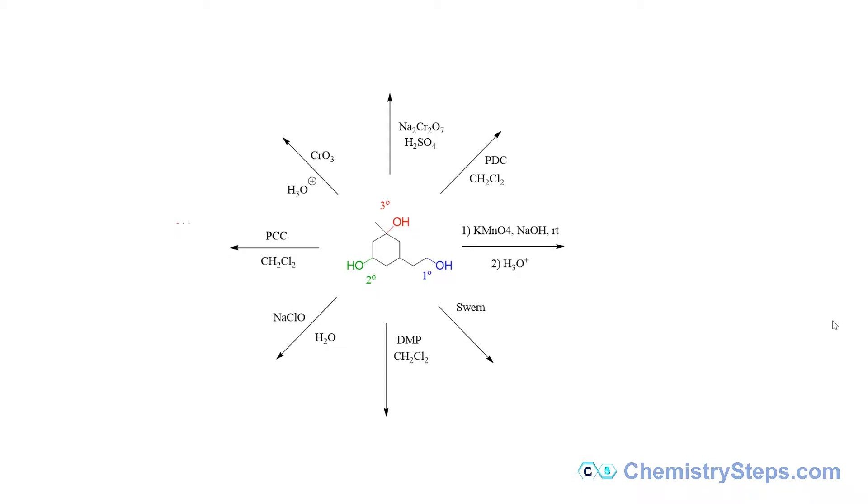So in this example molecule we have three types of alcohols. We have primary alcohol, secondary alcohol, and tertiary alcohol, and we're going to identify how each of these oxidizing agents is going to react or not react with these alcohols.